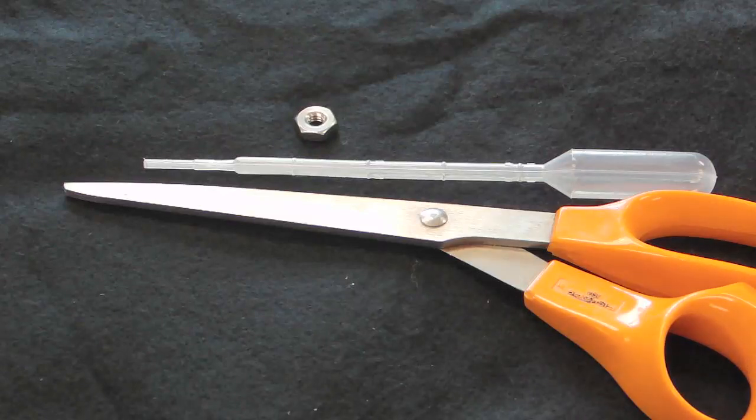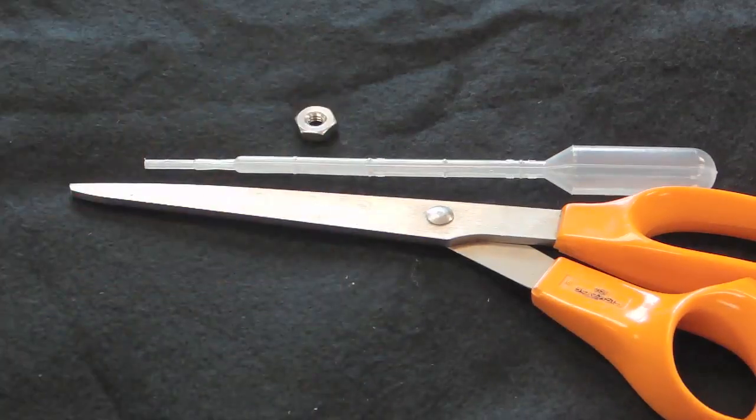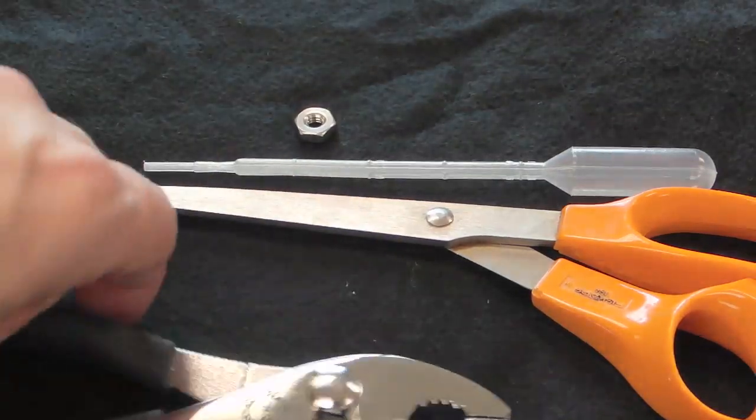This is how you make a simple Cartesian diver with a 1 milliliter pipette, a bolt, a pair of scissors, and a pair of pliers, flat nose pliers.